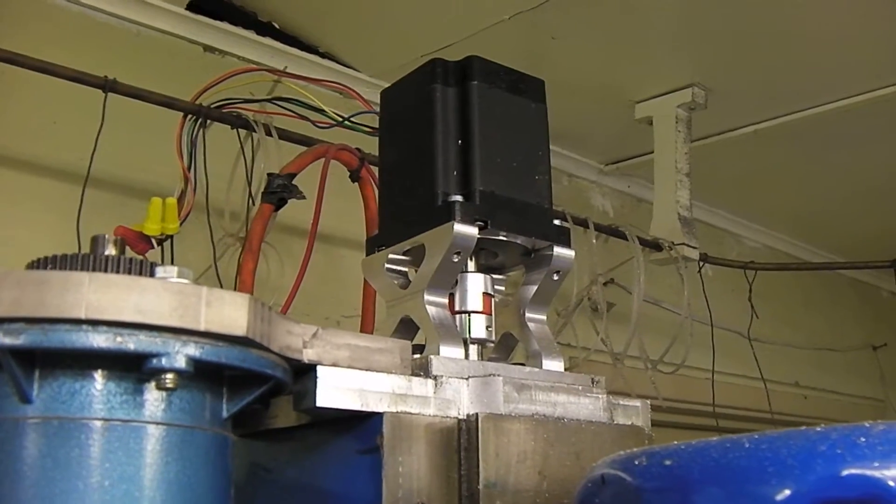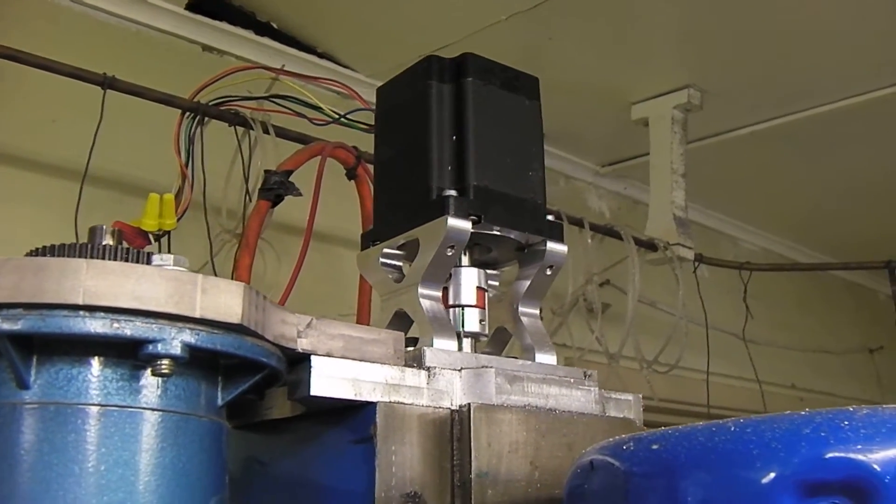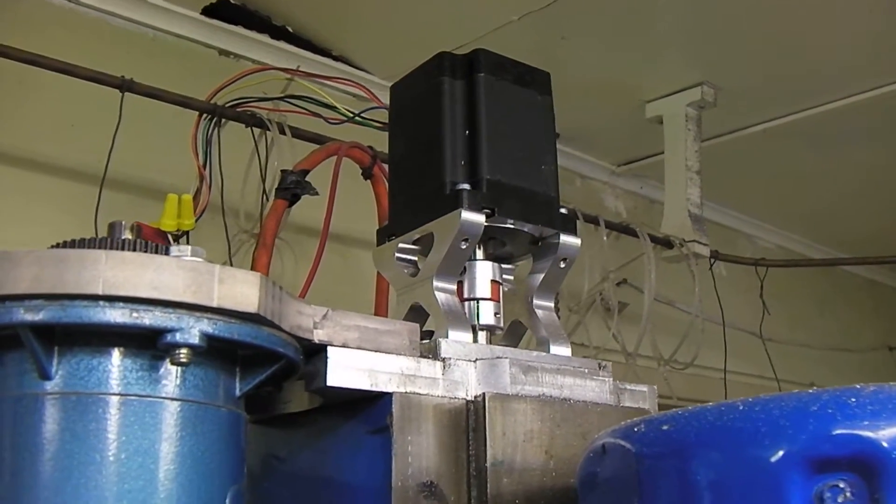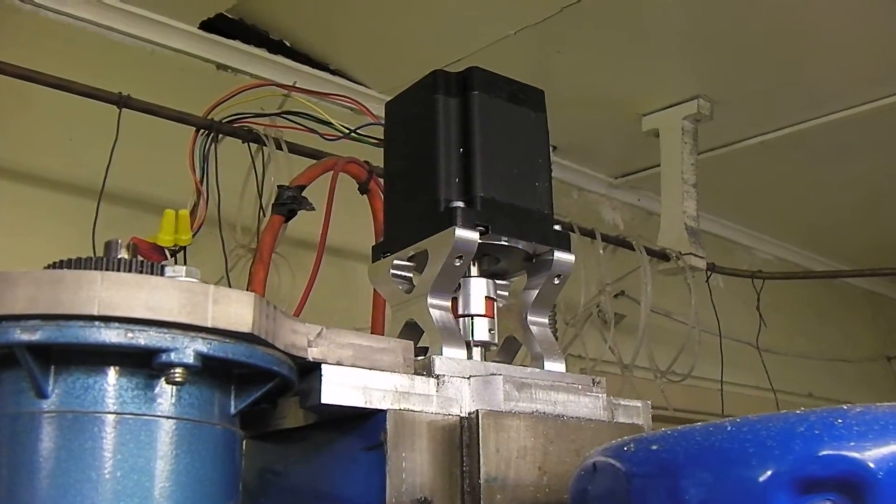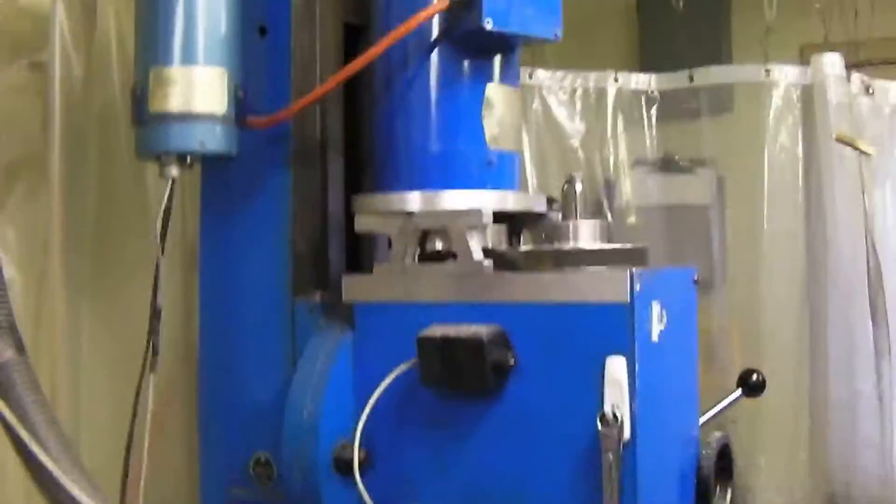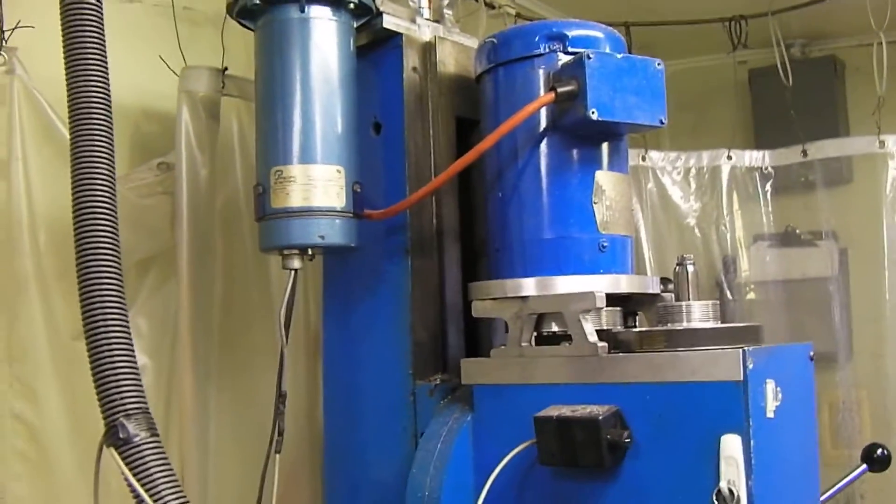But I recommend the 640 ounce NEMA 34 or the 570 ounce NEMA 23 for the Z on the G704. Now this is quite a bit larger mill. It's literally three times the size.